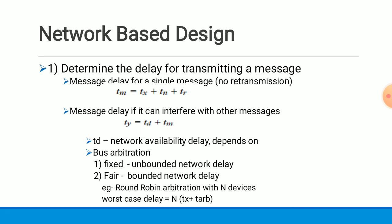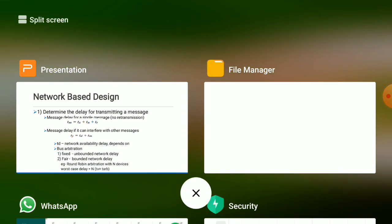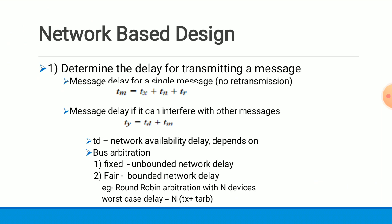Now if messages can interfere with each other, then analyzing communication delay becomes difficult. In this case, the message delay equation is written as: TY = TD + TM. TD is the network availability delay — that is, the waiting time for the network to become available. It is difficult to calculate this delay as it depends on the type of bus arbitration used in the network.